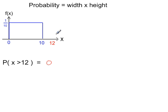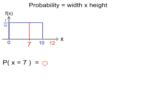The probability that x is greater than 12: greater than 12 is to the right of the distribution, and there is no definition of the probability function there — f of x is 0 out here, so the probability is 0. You only calculate probabilities within the defined region; outside that, f of x is 0. For P(x = 7): 7 is inside the interval 0 to 10, but we're not shading any area, and for continuous distributions it's the shaded area that represents probability, so the probability is 0.